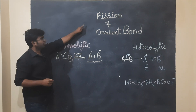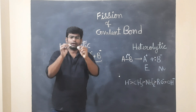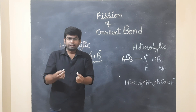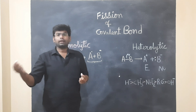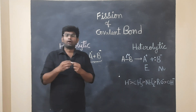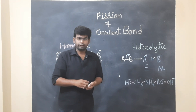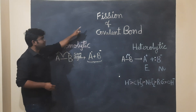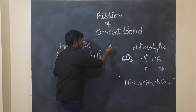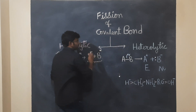The first question is the fission of the covalent bond. We have to break the covalent bond. We have to break the electrons — electrophilic and nucleophilic. If we do this, we have to break the components. In this fission of the covalent bond, we have to do homolytic and heterolytic fission. We have two types.